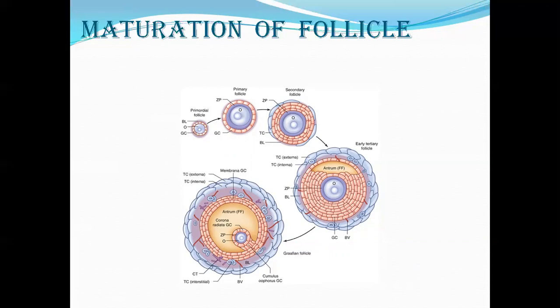Then the secondary follicle develops: the criteria is multiple layers of granulosa cells and development of thecal cells outside the basal lamina. As the thecal cells start developing, a secondary follicle is formed with the primary oocyte still inside the zona pellucida. Once secondary follicles are selected to become the dominant follicle, the granulosa cells undergo intense mitotic division and start secreting antral fluid.